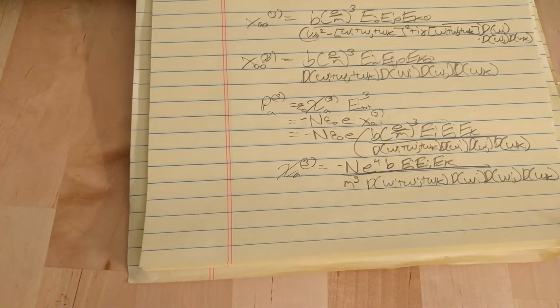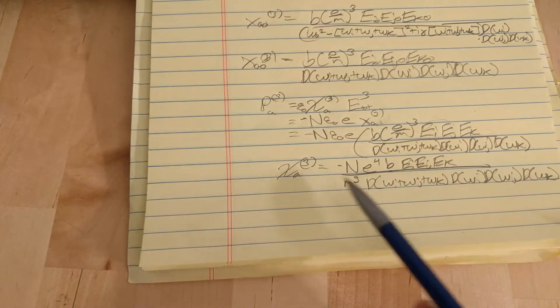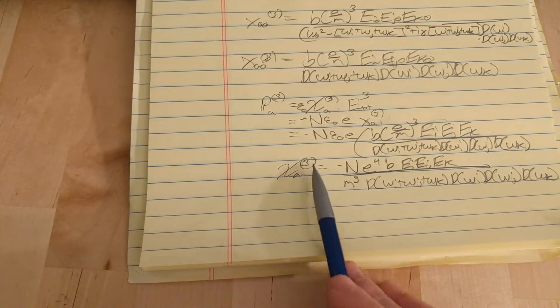Chi 3. Okay, so here we go. This is what we're looking for, the third order susceptibility. And you get the polarization by just plugging that in there.